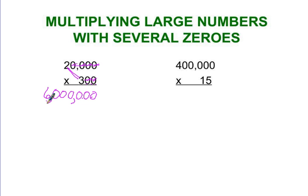I can copy down the zeros again, and it might even be easier on something like this to write 15,000 times 400. Put the number with the zeros on the bottom, 1, 2, 3, 4, 5.